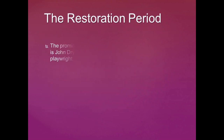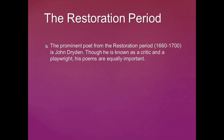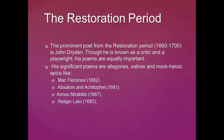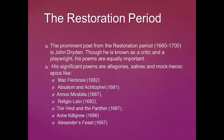The metaphysical period is followed by the Restoration period, where Charles II is restored to the throne in 1660. The prominent poet from the Restoration period is John Dryden. Though he is known as a critic and a playwright, his poems are equally important. His significant poems are allegories, satires, and mock heroic poems like Mac Flecknoe, Absalom and Achitophel, Annus Mirabilis, Religio Laici, The Hind and the Panther, Anne Killigrew, and Alexander's Feast. John Dryden is equally important as a critic, dramatist, and poet.